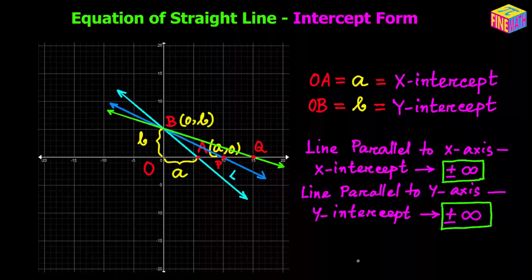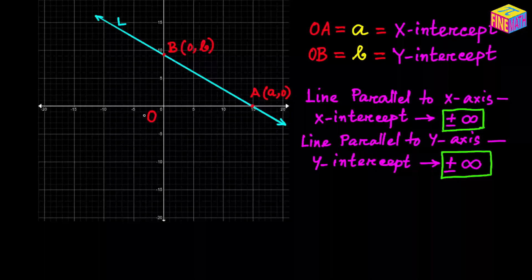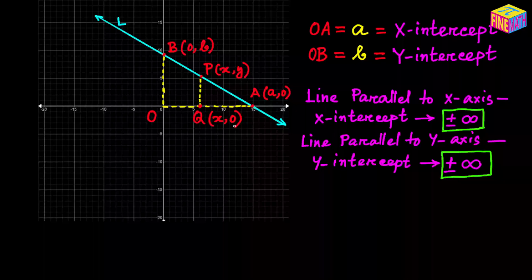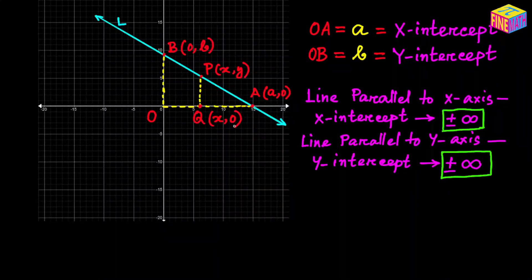Now let's derive the equation of a straight line in the intercept form. In this diagram we have a straight line L that cuts the x-axis at point A with coordinates (a, 0), where lowercase a is the x-intercept, and cuts the y-axis at point B with coordinates (0, b), where lowercase b is the y-intercept. Let's assume there is a point P on this straight line with coordinates (x, y). I will drop a perpendicular from P onto the x-axis, landing at point Q with coordinates (x, 0), since P and Q share the same x-coordinate and Q lies on the x-axis.